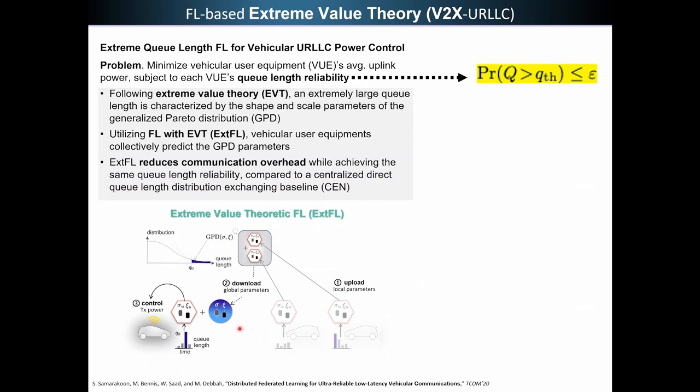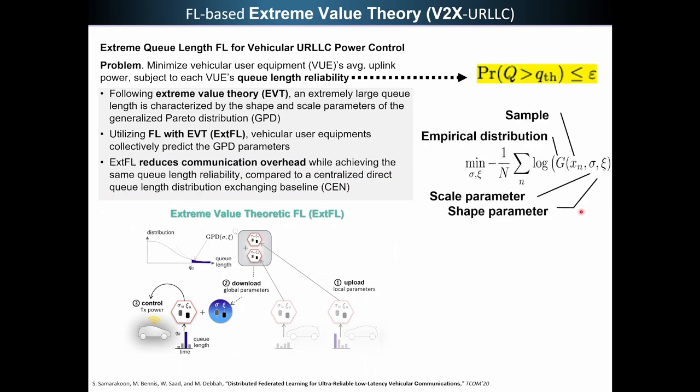Now to learn this distribution, essentially, you can either do it using data, which corresponds to the queue length here. You can either communicate all this data to the server and then the server will just train the model for you, or you could do it in a federated learning manner, which we actually did. So now these devices will communicate the model parameters here to the server and the server will just average them and then send them back. Since we are in an ultra reliable setting, we're interested in characterizing this blue part of the distribution of the latency here, using data. So you can formulate this mathematically. Here I'm just showing you essentially the maximum likelihood formulation where we essentially need to learn from data and across many vehicles, the scale and shape parameter.